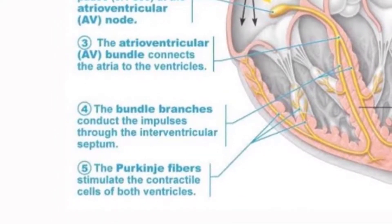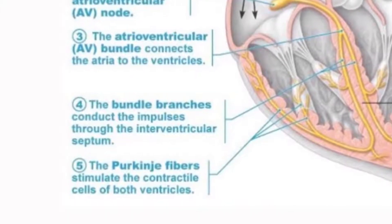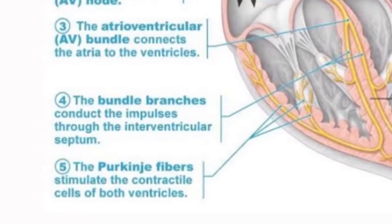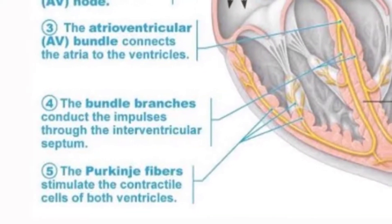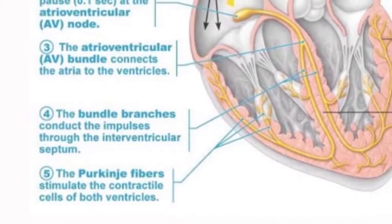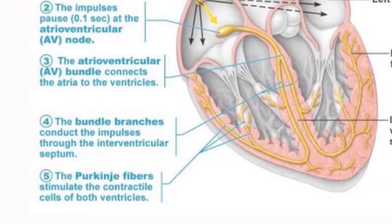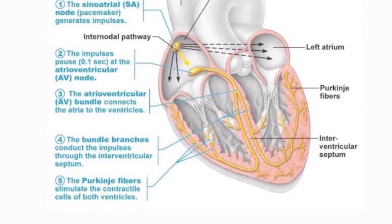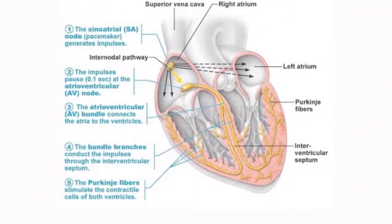The subendocardial Purkinje fibers, or Purkinje fibers, are called Purkinje fibers because they were first discovered by a Czech scientist, Jan Evangelista Purkinje. These are specialized nerve fibers found in the ventricles that cause ventricular systole. It is important to note that when we talk about systole we mean contraction, and when we talk about diastole we mean relaxation.